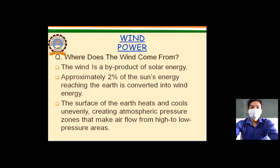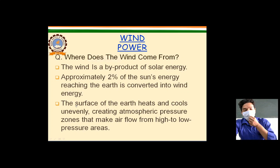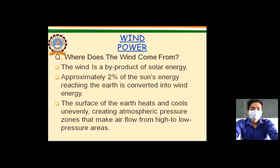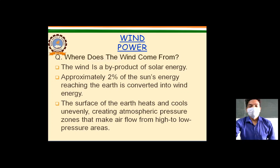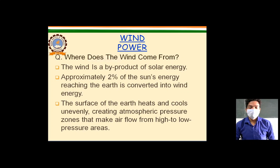Point number two is the clarification for point number one — that wind energy is a by-product of solar energy. The last point says the surface of the earth heats and cools unevenly due to temperature changes, creating atmospheric pressure zones that make air flow from high to low pressure areas. Air flow takes place from high pressure to low pressure areas — this is a very obvious concept.